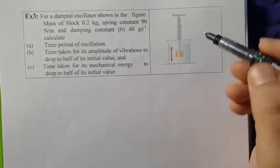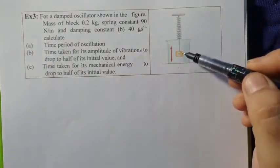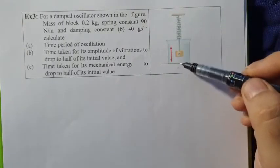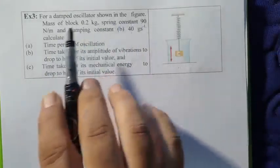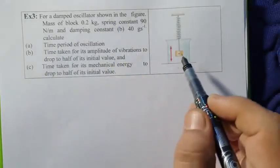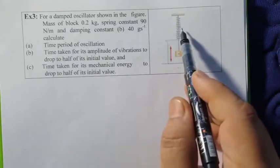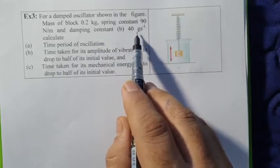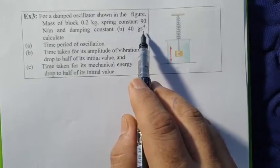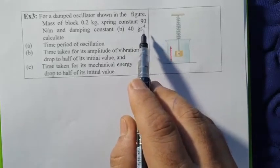Next example, we have a system where a block is oscillating in a viscous liquid. For a damped oscillator shown in the figure, mass of block is 0.2 kg, spring constant is 90 newton per meter, and damping constant is 40 gram per second. See the unit.